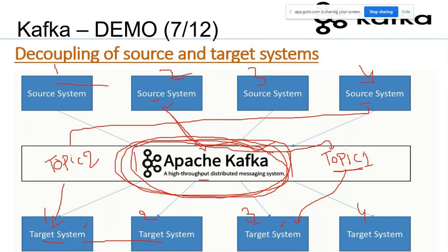Just like a home router where you can connect a laptop, mobile, or any number of systems, Kafka takes the load of message distribution. Kafka is a highly powerful messaging backbone — its purpose is to manage communication among millions of applications in a simple, decoupling fashion. Decoupling means the target system and source system don't have direct communication; they communicate indirectly via Kafka.